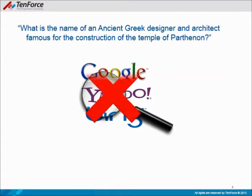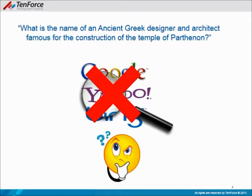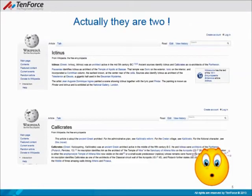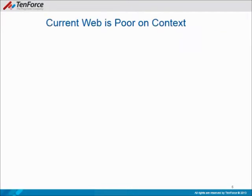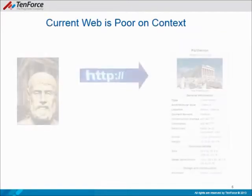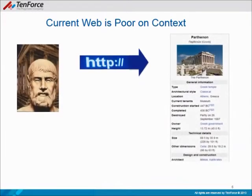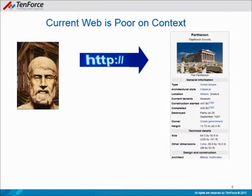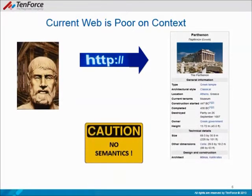Maybe such a name doesn't exist after all? Well, it exists and actually there are two of them: Ictinus and Kallikratis. And of course the question is, why didn't the Wikipedia pages show up even though they are highly ranked by Google? The answer is basically that the current web is poor on context — all the relations between concepts are defined through HTTP links.